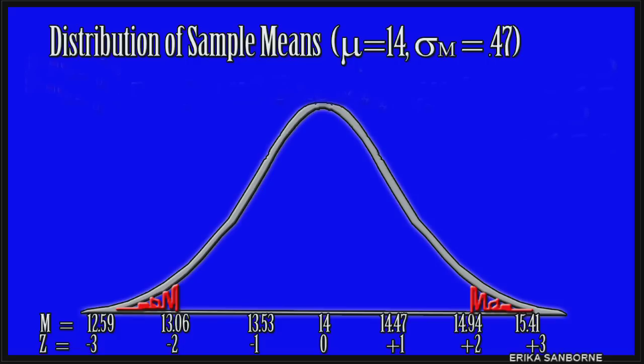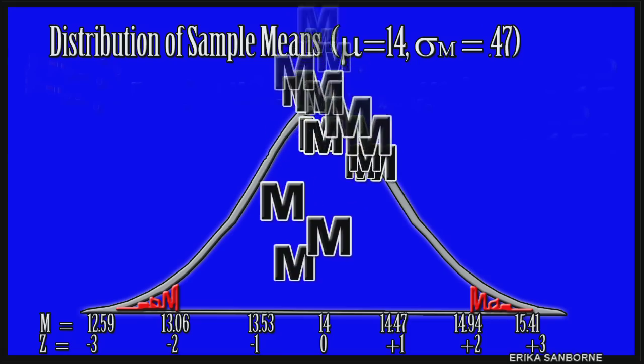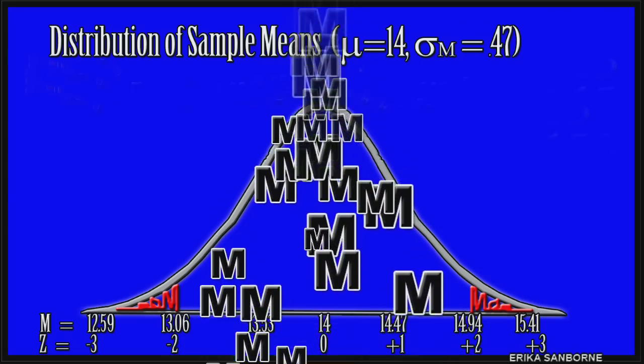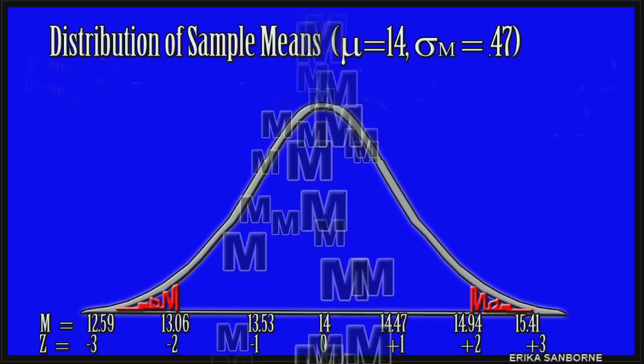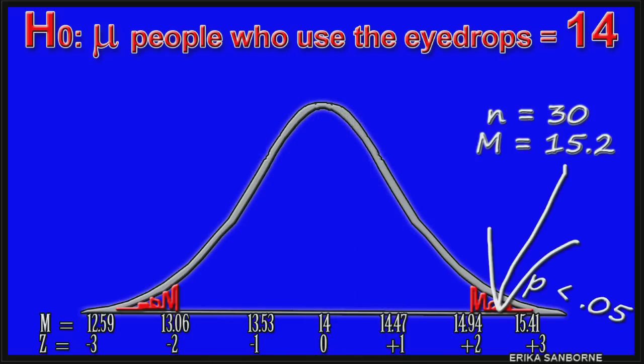To some extent, sample means are different from one another just because people are different. That's why we drew this picture to begin with. But even considering how different people are from one another, this sample score is still unusual. It's not likely to be this extreme just by chance. 19 out of 20 times, the sample is not going to be this extreme just by chance.